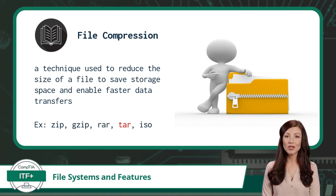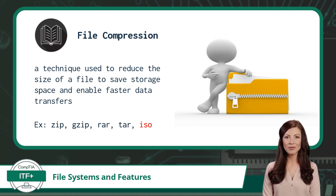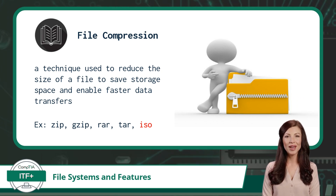TAR, short for Tape Archive, is a compression format commonly used on Linux and macOS. An ISO is a standard file format used for creating images of optical disks like CDs and DVDs. It is compatible with various operating systems and commonly used to distribute software and operating system installation files.